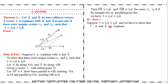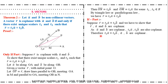Now the if part: we assume R bar equals T1·A bar plus T2·B bar and we have to show that R bar is coplanar with A bar and B bar. Since A bar and B bar are coplanar, T1·A bar and T2·B bar are also coplanar because they are scalar multiples. Therefore T1·A bar, T2·B bar, A bar, and B bar are coplanar, and therefore A bar, B bar, and R bar are coplanar.